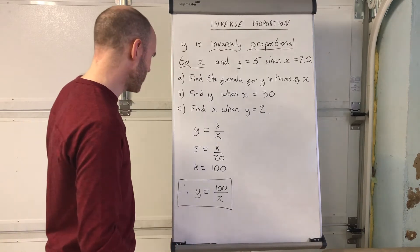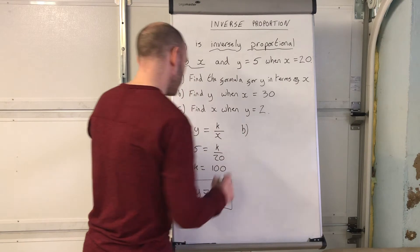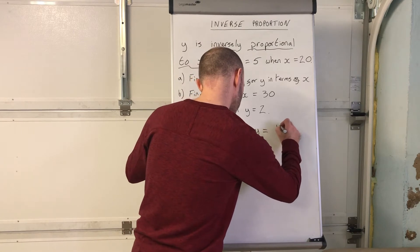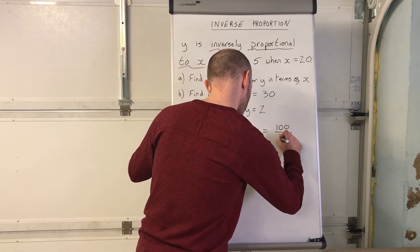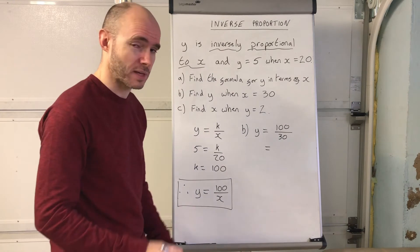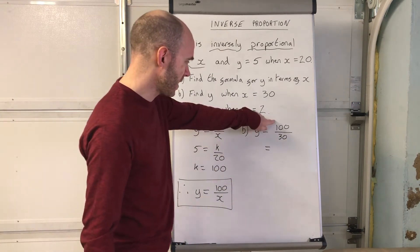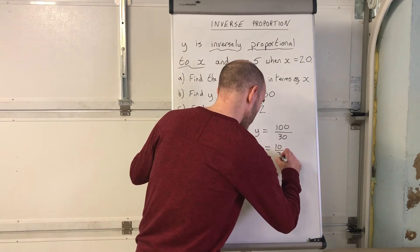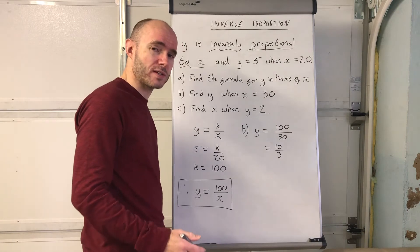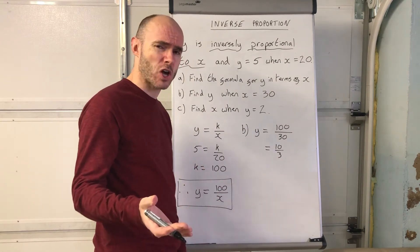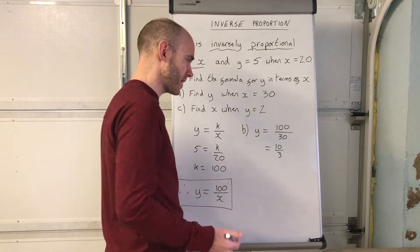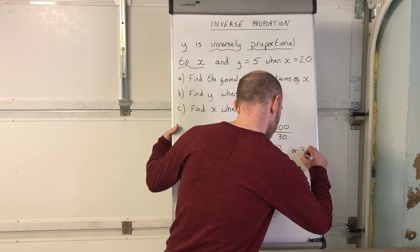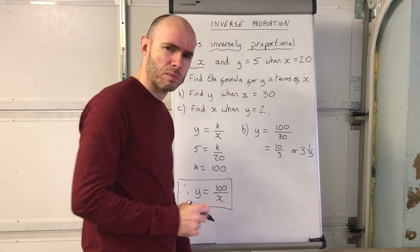For part b, find y when x equals 30: I'm going to do 100 divided by 30. Without a calculator, 100 divided by 30 is the same as 10 over 3 — ten thirds. That's your answer: 10 thirds, or 3 and a third, or 3.3 recurring. Do not forget the recurring dot, because it's got to be an exact answer.